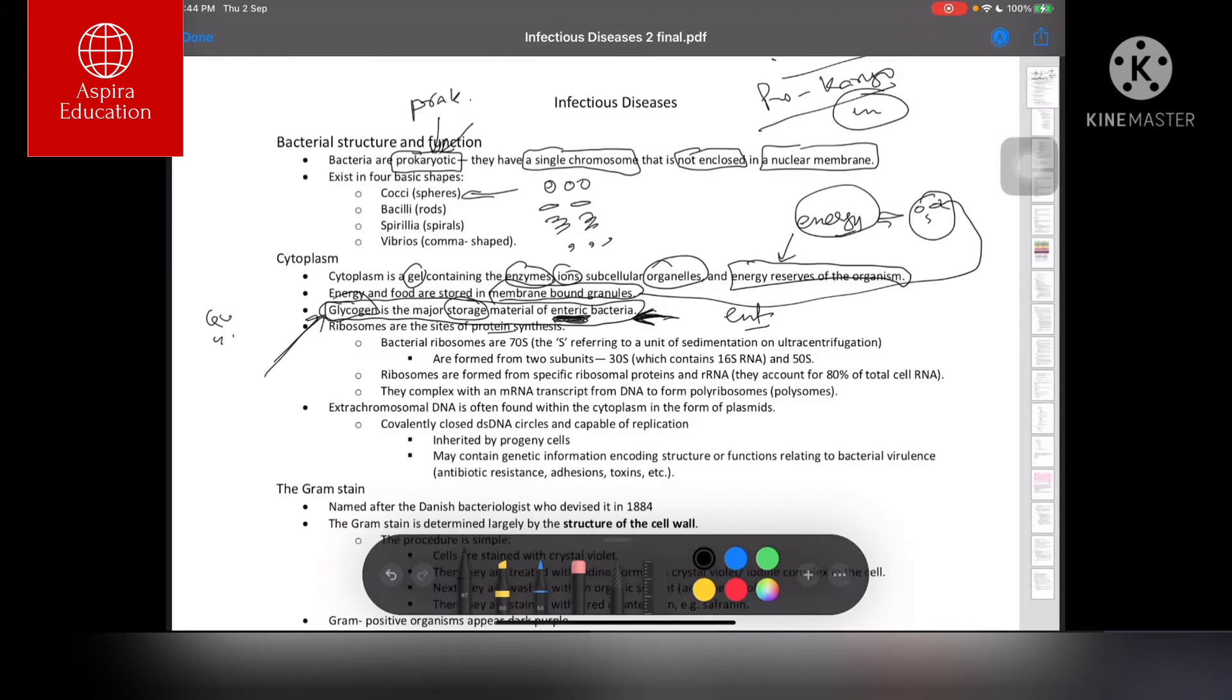Where are proteins synthesized? Same way as in humans—ribosomes are the location. But these ribosomes are different from humans in that they are 70S, where S refers to the unit of sedimentation from ultracentrifugation. This 70S is formed by two subunits: 30S and 50S.